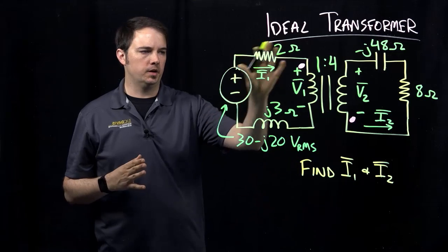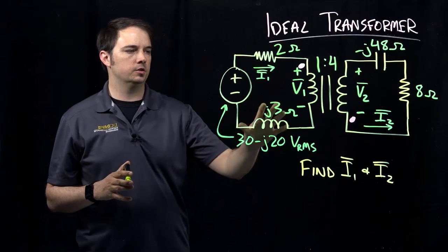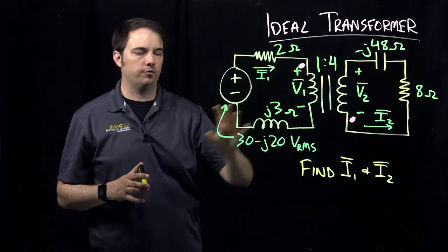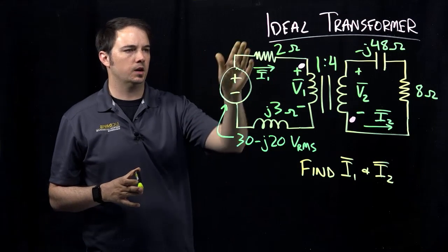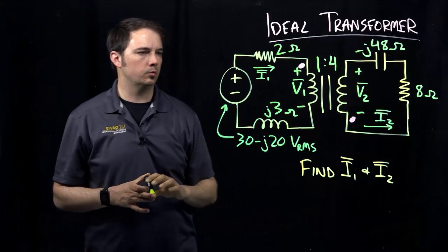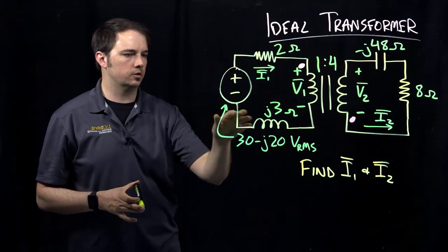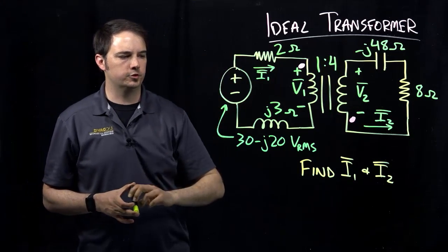I encourage you to take a minute right now to copy down the problem that we have here. As you see, basic kind of standard setup for an ideal transformer type of circuit that we might have, a couple of other impedances that we will have to deal with, resistor, capacitor, another inductor, and my voltage source here.